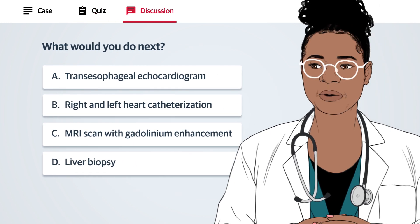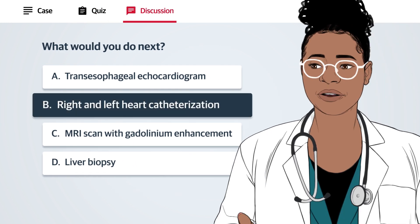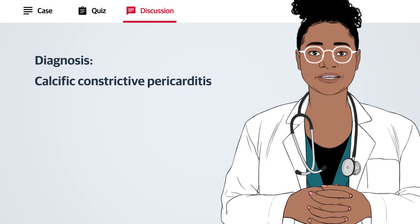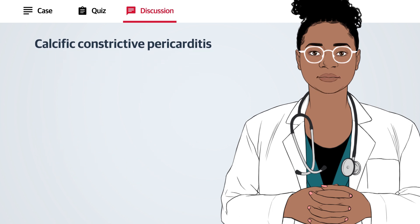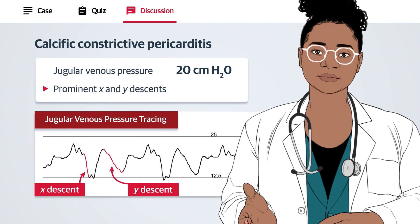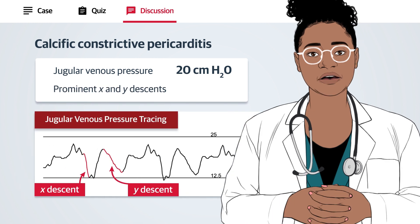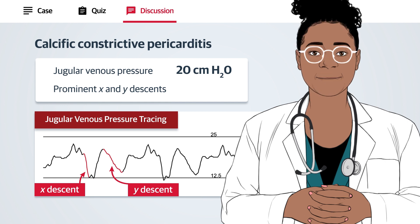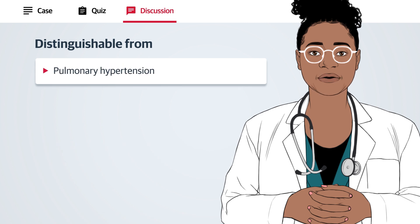The answer is B: right and left heart catheterization. The patient is presenting with classic clinical findings of calcific constrictive pericarditis. The jugular venous pressure is elevated to 20 centimeters of water with prominent X and Y descents. This contour distinguishes constriction from other conditions that can present with subacute dyspnea on exertion and cause jugular venous pulsation, like pulmonary hypertension,